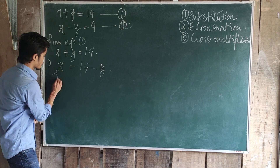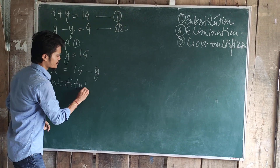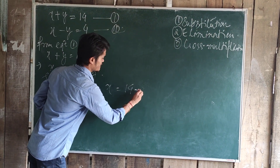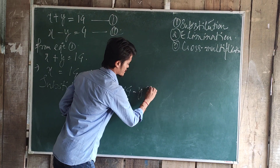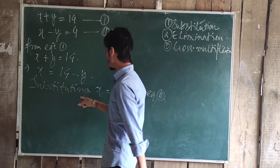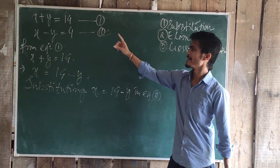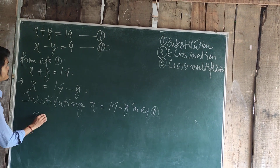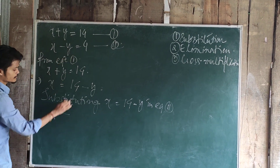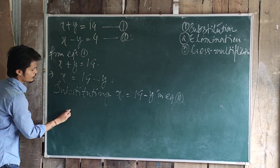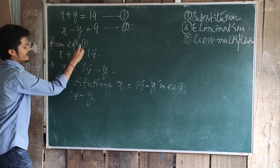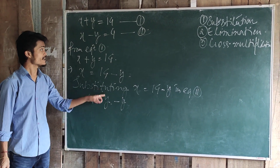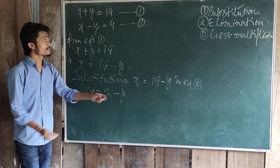Now we are going to substitute. Substituting x equal to 14 minus y in equation 2. Let us substitute and see what happens. In place of x, we are going to write 14 minus y. Then minus y: so 14 minus y minus y is equal to 4.